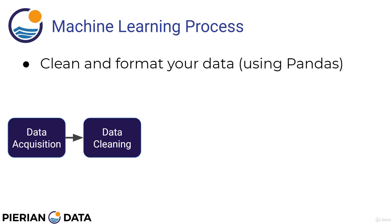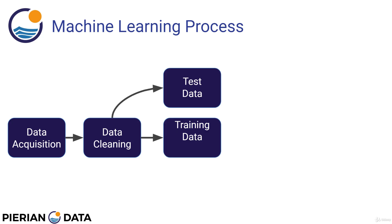Then we split the data into training data and test data. What we do here is take some portion of our data — maybe around 30 percent — to be test data, and then the larger majority, like 70 percent, to be our training data. We're going to use that specific training set on our network or model in order to fit a model to that training data.